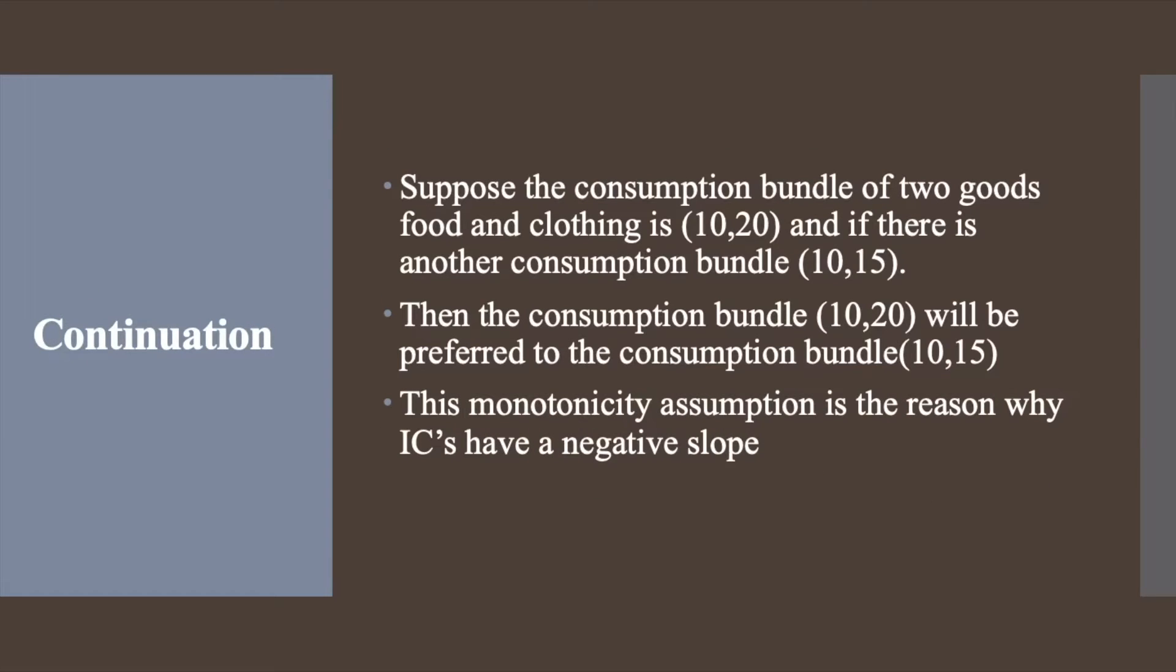For example, if the consumption bundle of two goods, food and clothing, is (10,20) which is 10 units of food and 20 units of clothing, and suppose there is another consumption bundle which is (10,15) which has 10 units of food and 15 units of clothing. Then the consumption bundle (10,20) will be preferred to the consumption bundle (10,15) because the units of food remain the same and the units of clothing is more in the bundle (10,20).